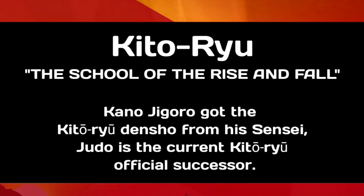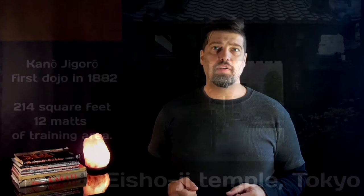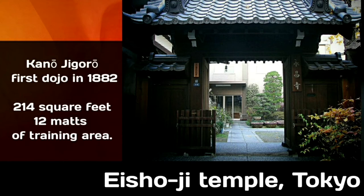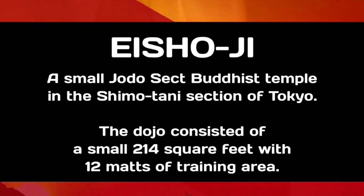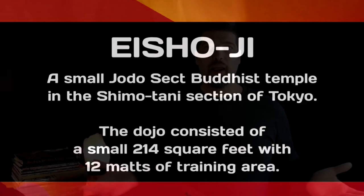In 1882, Kano Jigoro founded his first dojo at the Eishoji, a small Jodo sect Buddhist temple in the Shimotami section of Tokyo. The dojo consisted of a small 214 square feet with 12 mats of training area. The Eishoji temple was originally a shoin, which is a style of Japanese residential architecture used in temple guest halls and Zen abbot's quarters during the Edo periods.